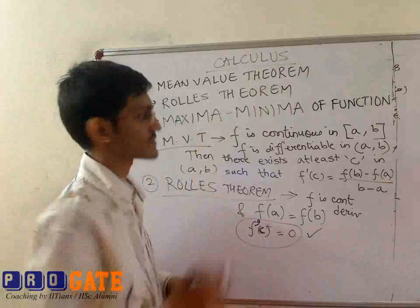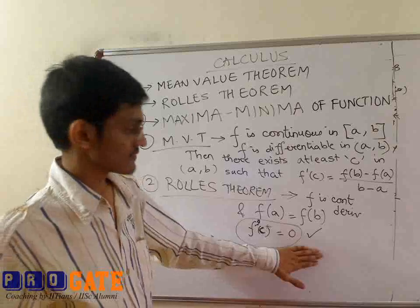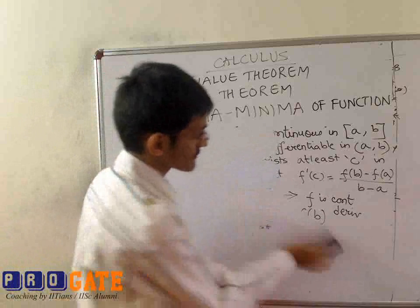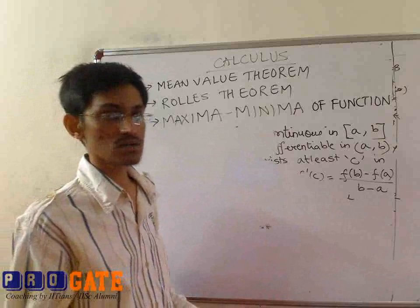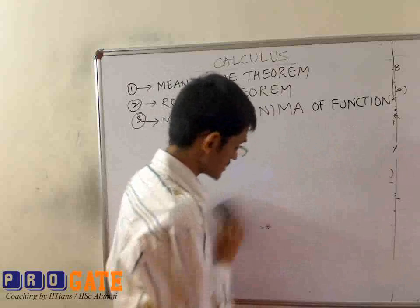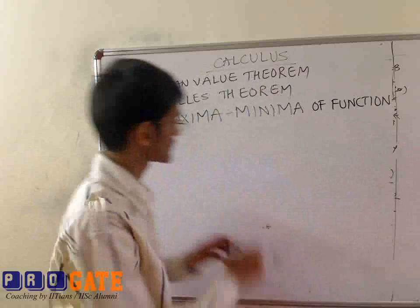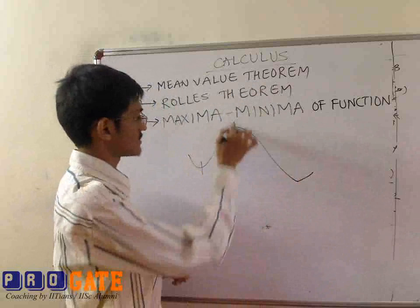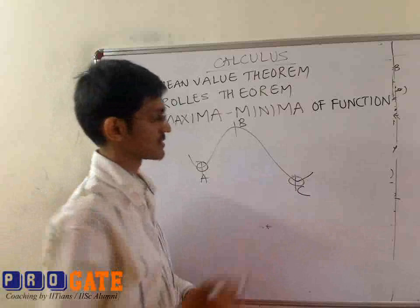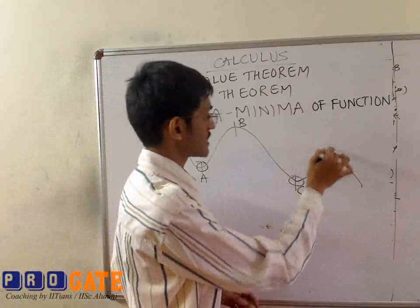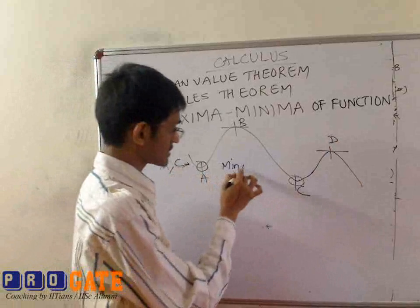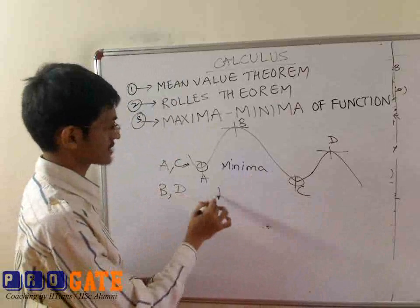The next smaller topic is maxima and minima of a function, somewhat related to f'(c) being equal to zero. For any given function f, you can find the maxima and minima of that function. It can be a local maxima, local minima, or absolute maximum or absolute minima. When we say local, what does that mean? Consider points a, b, and c — points a and c give the minima value, while b and d can be called the maxima points.